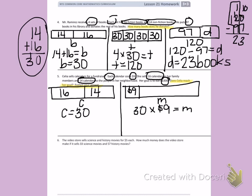So I have the 30 calendars she sold times the $9 each they cost which equals M. If I use my strategy 3 times 9, just forget about that 0 for right now, 3 times 9 is 27 and I add the 0 to the end. So Celia made $270.